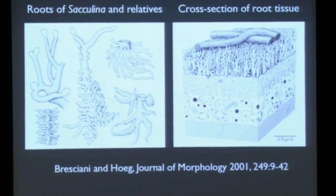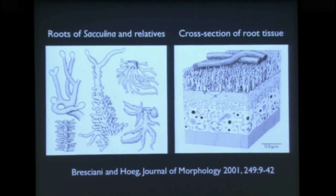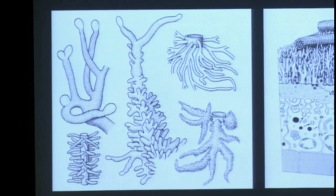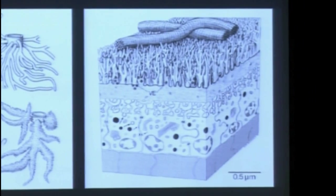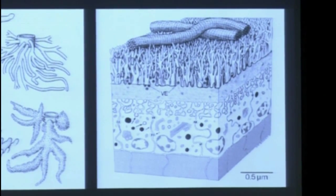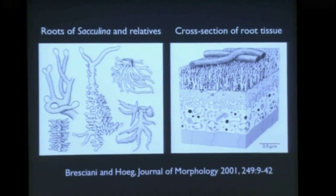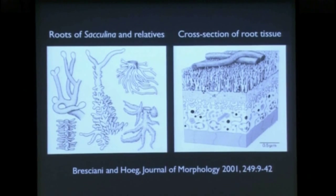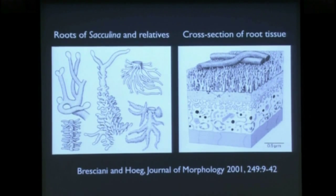These close-up drawings show sacculina and some related species — on the left are the different roots, and on the right is a cutaway showing the fine structure of the roots. These are really sophisticated structures. They are able to make their way inside another animal without killing it, without being attacked by its immune system, and can actually extract food out of the host and process it. The animal doesn't have a mouth, but it has found a way to eat. Sacculina evolved into something new — something new and pretty amazing.